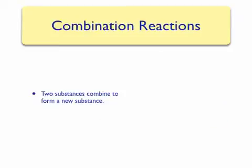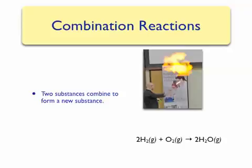The first type of reaction are combination reactions. In a combination reaction, two substances, usually simpler in structure, combine to form a new substance that is usually more complex. A good example of a combination reaction is the reaction between hydrogen and oxygen, in the presence of a fuse, to form water.